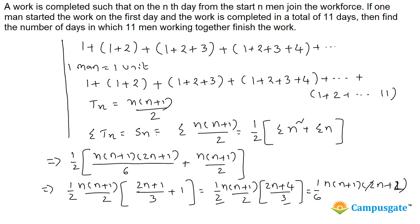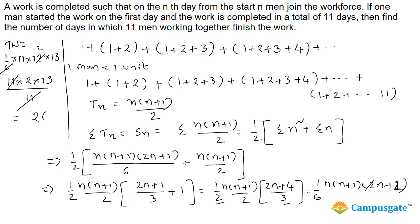Substituting n = 11: total work = (1/6) × 11 × 12 × 13. Since 6 goes into 12 twice, this simplifies to 11 × 2 × 13. Now, if 11 men work together every day with no joining or leaving, they do 11 units per day. Dividing total work by 11 units/day, the 11s cancel, leaving 2 × 13 = 26. The work is completed in 26 days.